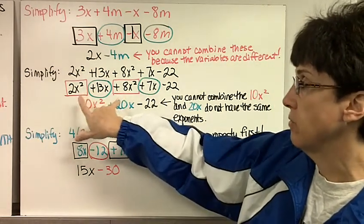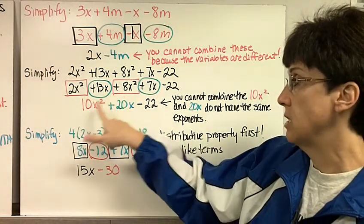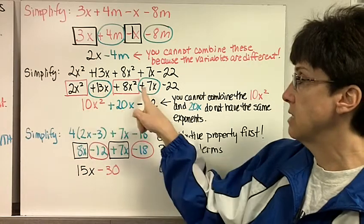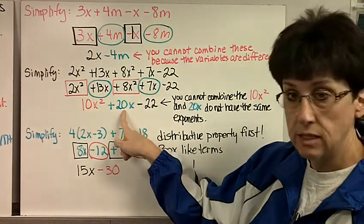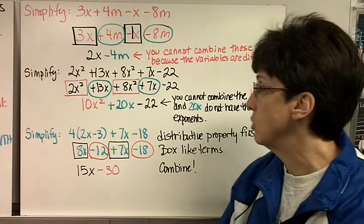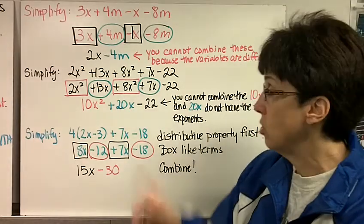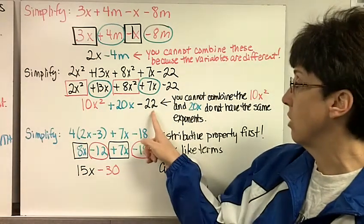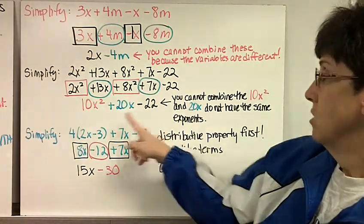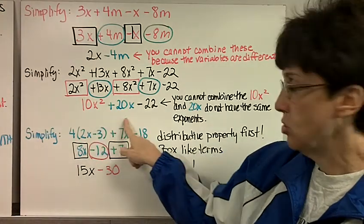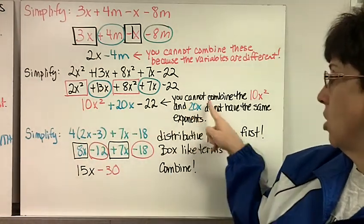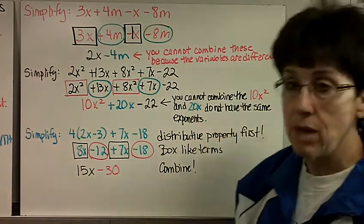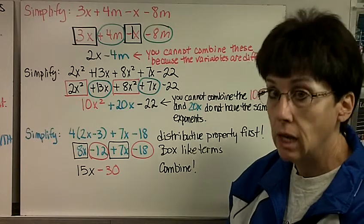Now I'm just going to look at the x squared. So if I have 2x squareds and I get 8 more, that's an addition problem, so 10x squared. Now if I have 13x's and get 7 more, I have 20x's. But what about this negative 22? Well, there are no other constants. There's nothing else in this problem that doesn't have a variable. So I can't combine it with anything, so I just carry it down. So my answer is 10x squared plus 20x minus 22. And I cannot combine the 10x squared and the 20x because they do not have the same exponents. So they are not like terms.